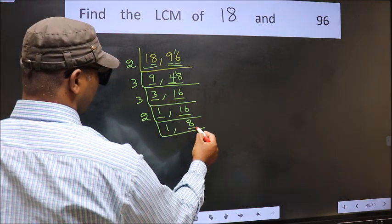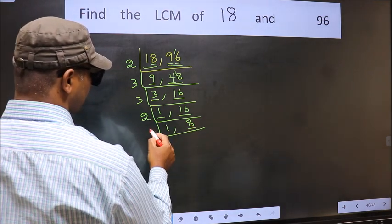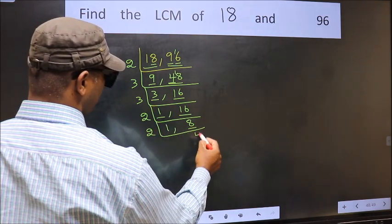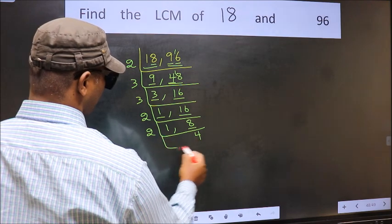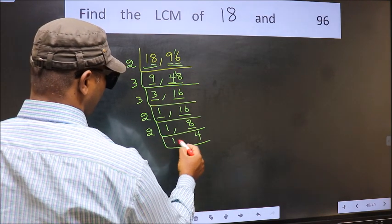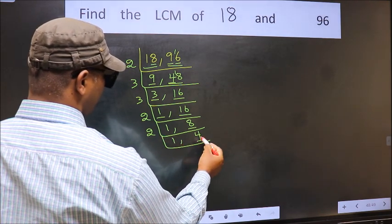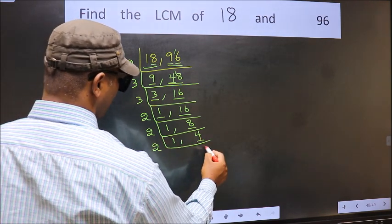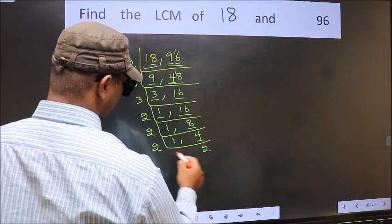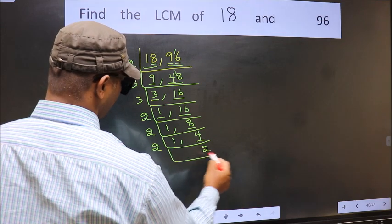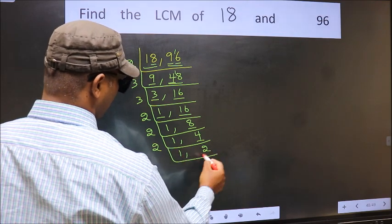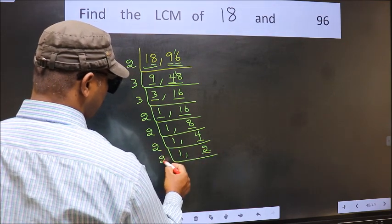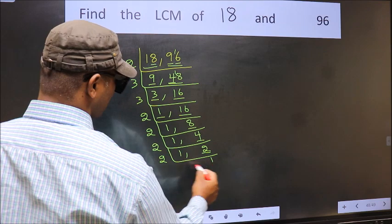Now we focus on 16. 16 is 2 eights, so 16 divided by 2 is 8. Then 8 is 2 fours, so 8 divided by 2 is 4. Then 4 is 2 twos, so 4 divided by 2 is 2. Now 2 is a prime number, so 2 divided by 2 is 1.